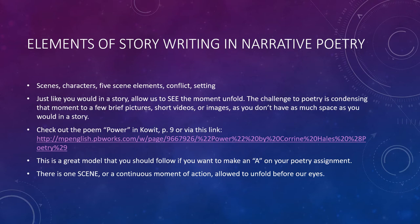Here are some elements of story writing that are also in narrative poetry, and this is the basis of writing a successful poem. If you can do all of this, you can make the other stuff work — this is what you need for the raw materials. We need scenes, characters, the five scene elements, conflict, and setting. Start with those and then work on lines, stanzas, rhythm, and sound. Just like in a story, you need to allow us to see the moment unfold. The challenge in poetry is condensing that moment to a few brief pictures or short images, because you don't have as much space as in a story — eight to twelve pages versus 200 words or less.